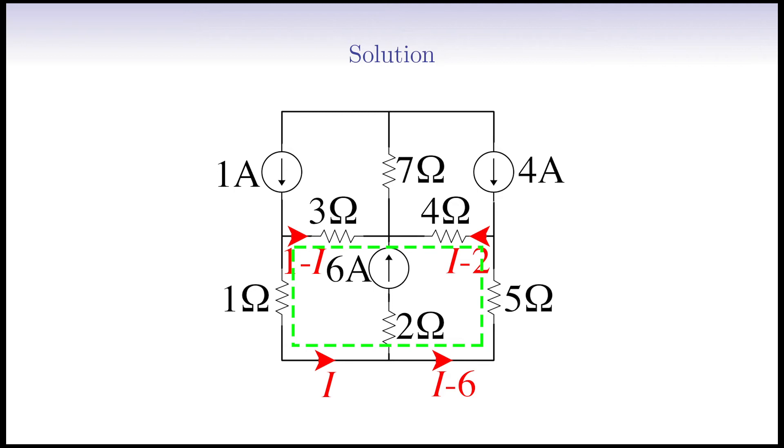As always, in order to write KVL, we have to set a sign convention. In the previous physics puzzles, I emphasized that this sign convention is arbitrary. But, once we set a sign convention, we should stick to it. We can use this sign convention, that is, when we pass through a voltage source from its positive head, and when we pass a resistor in the direction of the current, we get a plus sign. Or, the other sign convention, that is, when we pass through a voltage source from its negative head, and when we pass a resistor in the opposite direction of the current, we get a plus sign. I choose the first sign convention here, and move around the loop counterclockwise to write the KVL.